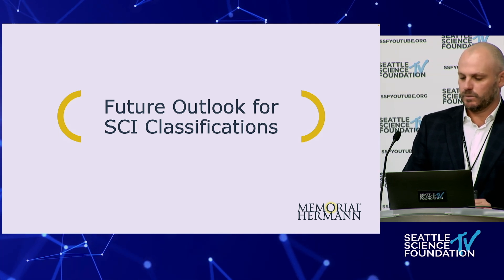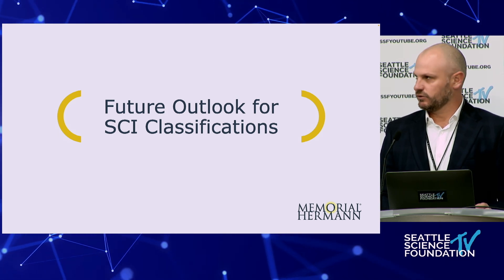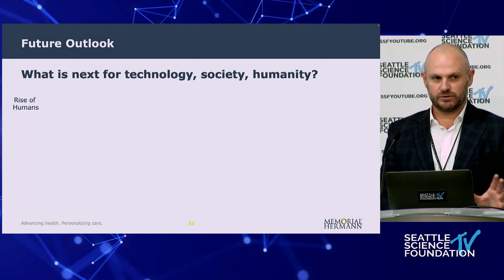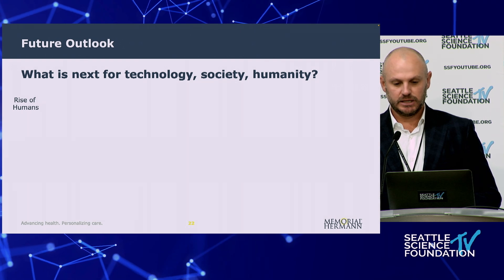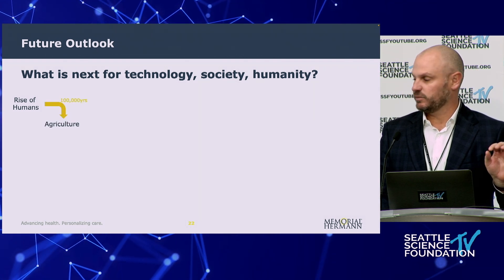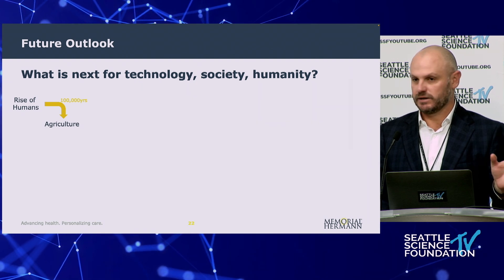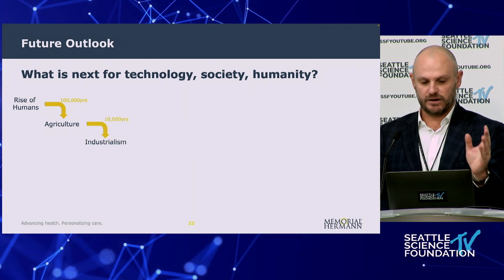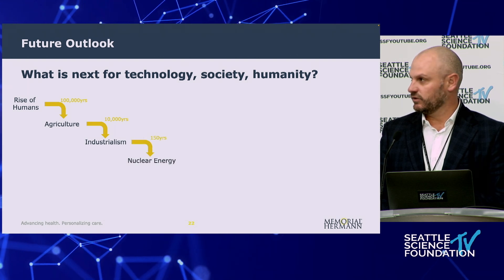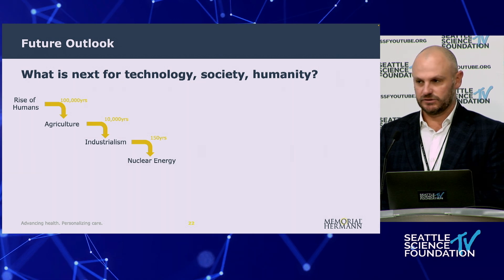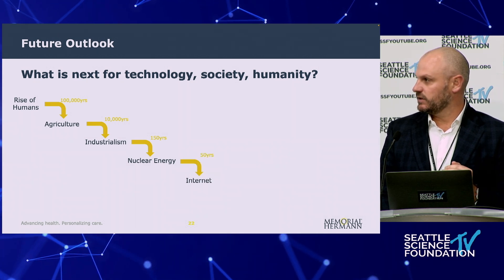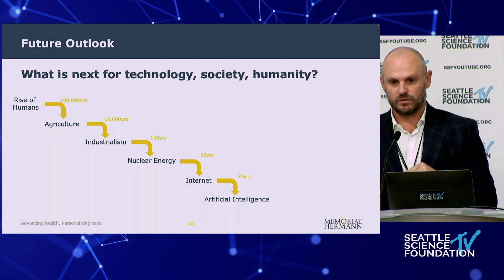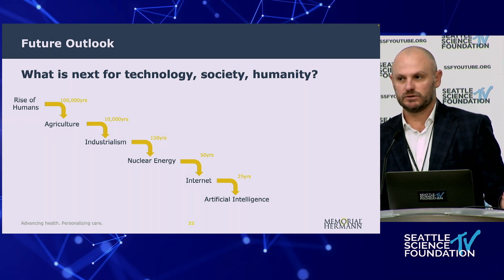What I was really excited to talk about today was looking at the future beyond a lot of these things. In order to do so, we have to step back and look at milestones within our society technologically. The rise of humans took about 100,000 years before we discovered agriculture. After that, it took about 10,000 years to reach our industrial age, then about 150 years to discover nuclear energy, then about 50 years to discover the internet, and 25 years from the birth of the internet to artificial intelligence, which really blew up and came onto the scene in 2022 in a big way.